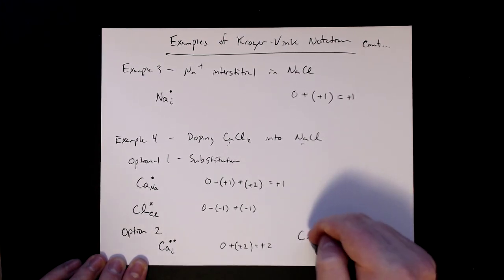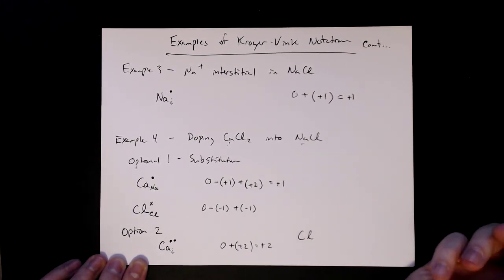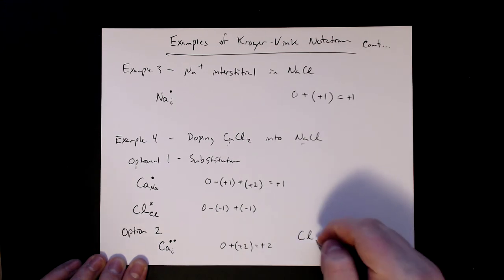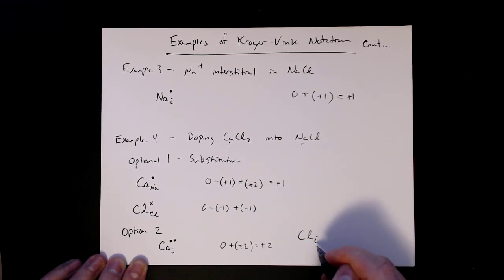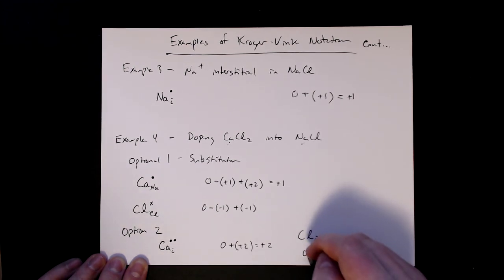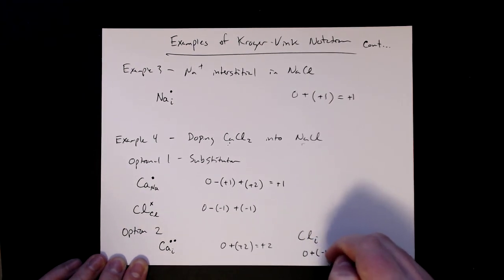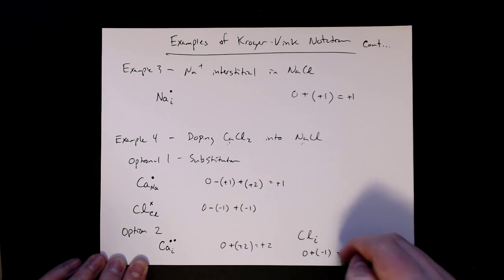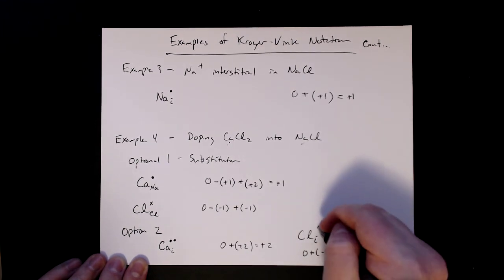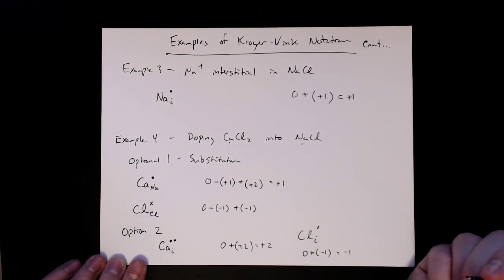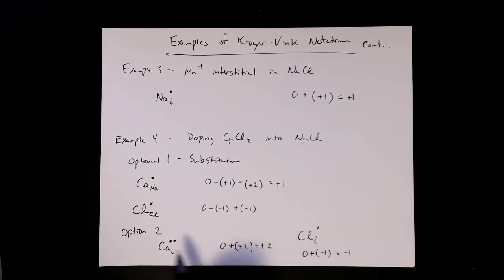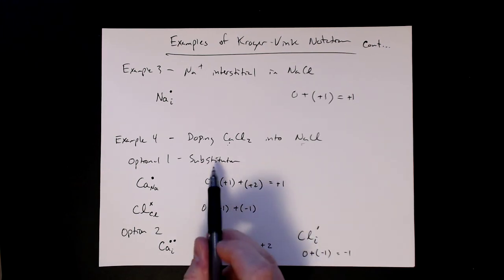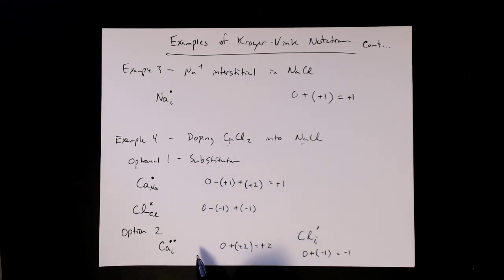And then let's look at the chlorine. So chlorine, if now it goes into an interstitial, which again is unlikely, but let's just write it out, would go into an interstitial position. And the charge here would be plus a minus one. So that would just be a minus one. And that's going to be one dash to indicate the charge there. So these are the couple of different options we could have, either substitutionally or interstitially.